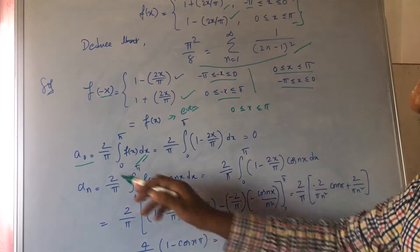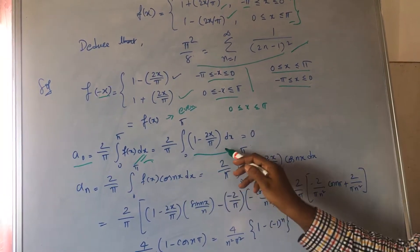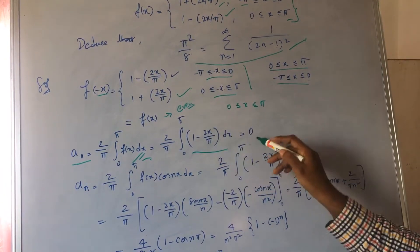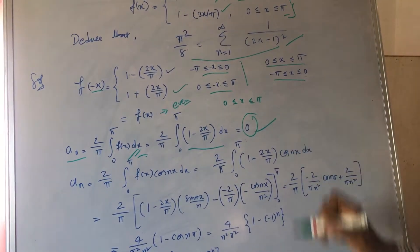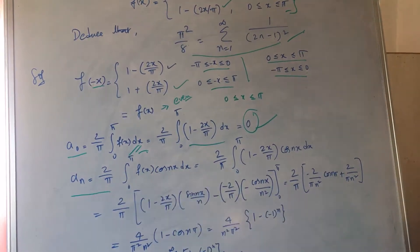Let us find what is a naught. This is the formula for this. When I substitute this, after finding the limit, I get a naught as 0. Let us find what is aₙ.